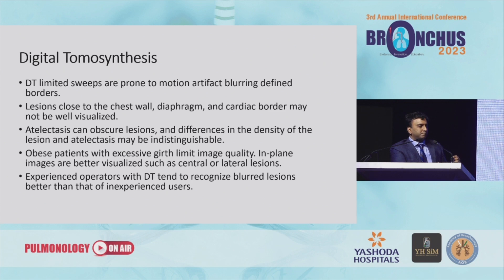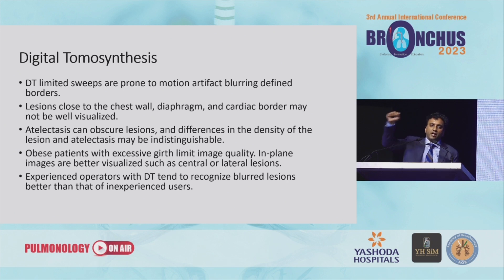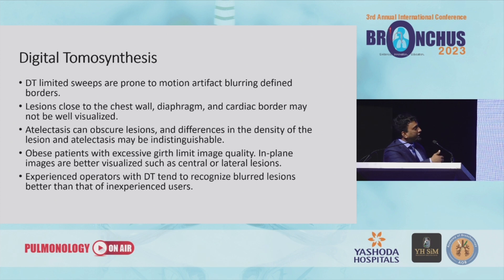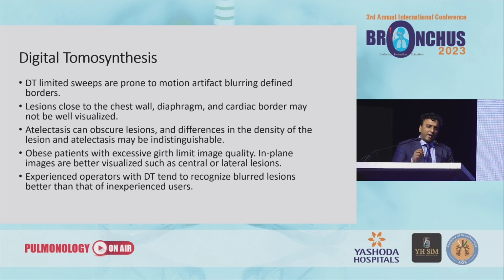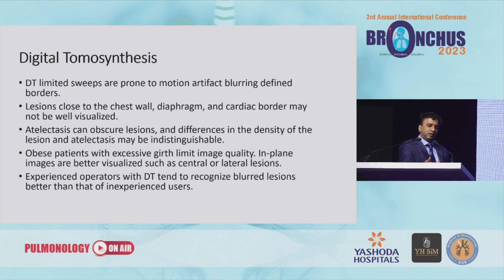What are the problems with digital tomosynthesis? First, you're more prone to motion artifact than with cone beam, because it takes a while to do that sweep — with cone beam, you can do a complete spin in five to eight seconds. Lesions close to the chest wall, diaphragm, or cardiac border may not be well visualized. Atelectasis can obscure lesions; with digital tomosynthesis it's very difficult to make out lesions adjacent to or partially obscured by atelectasis. And like all modalities, the more experience you have with DT, the better — I guarantee Bobby Mahajan is better than me at digital tomosynthesis because he's used it a lot more.